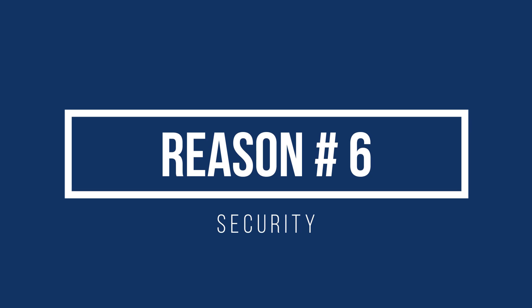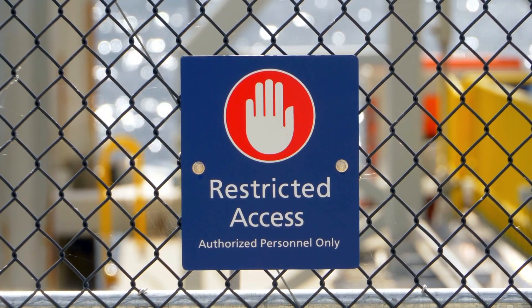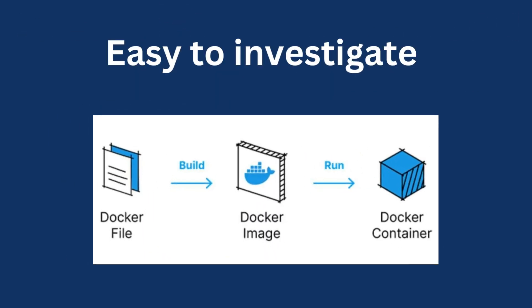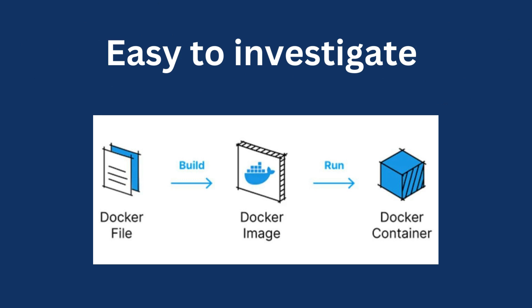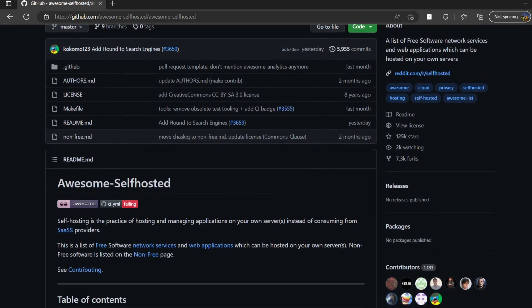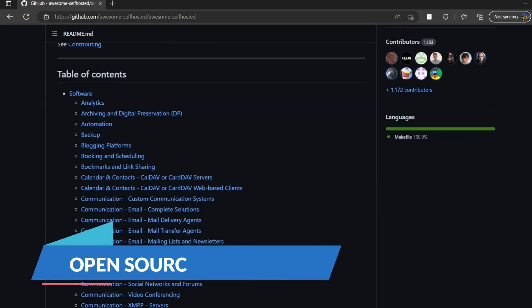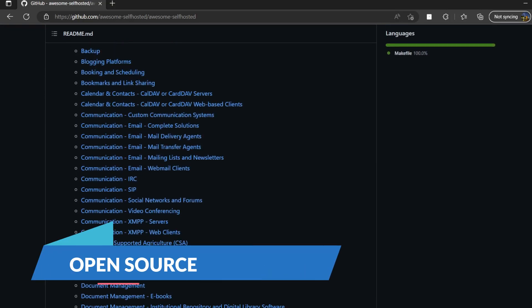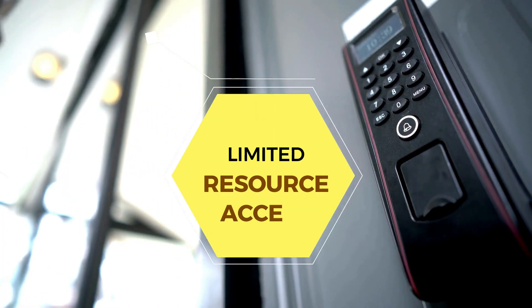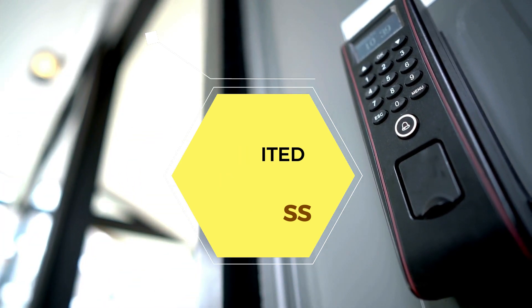The biggest advantage in my opinion is security. Docker containers only have access to what you allow. It's extremely easy to look inside the container image or the Dockerfile that it is based on to understand what is really happening. Most, if not all, self-hosted apps are open source and their Docker images are publicly available, which makes it easier to catch potentially malicious code. Since there is a limit to what resources a Docker container can access, you can limit the attack surface significantly.